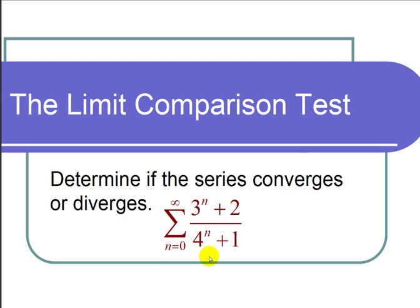Now I can't use the direct comparison test because I would need to show the inequality that our series is less than the geometric series and that would be hard. In fact it's not even true. So instead I'm going to use the limit comparison test.